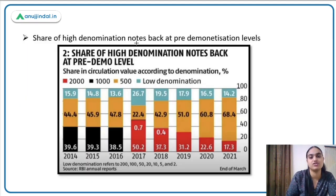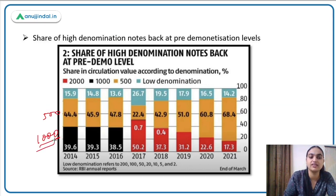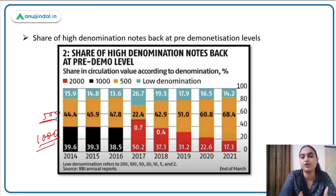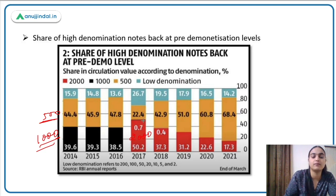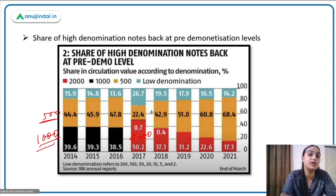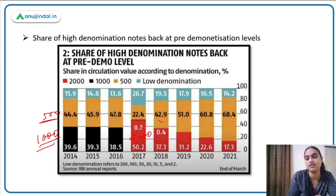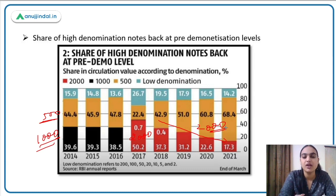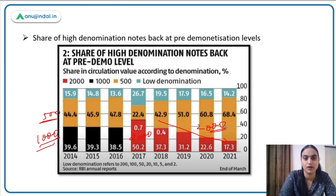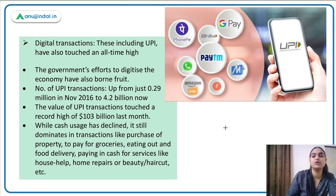Regarding high-denomination notes: before demonetization, ₹500 and ₹1000 notes had a major share of currency in circulation. After the ₹1000 note was banned, ₹2000 notes were introduced, and their ratio initially increased. However, it was realized that a higher circulation of ₹2000 notes made it easier to hoard black money. So gradually, the circulation of ₹2000 notes has been declining, as their high denomination was counterproductive to the original objective of curbing black money.